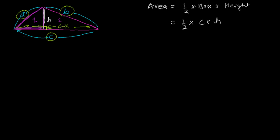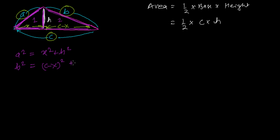In right triangle one, the hypotenuse squared gives: a² = x² + h². In right triangle two, the hypotenuse squared gives: b² = (c − x)² + h². By solving these two equations we can get the value of x, and then substitute to find h.